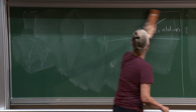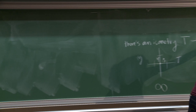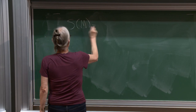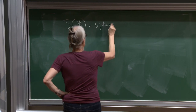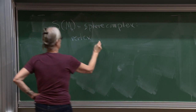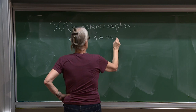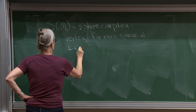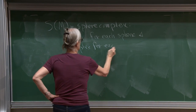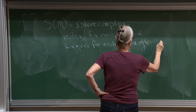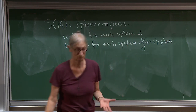So that's a sphere system, and I'm going to do the same thing you do with curve systems: make a simplicial complex S(M). It's called the sphere complex. It's got a vertex for each sphere S, and a k-simplex for each system of k+1 spheres. Simple definition.